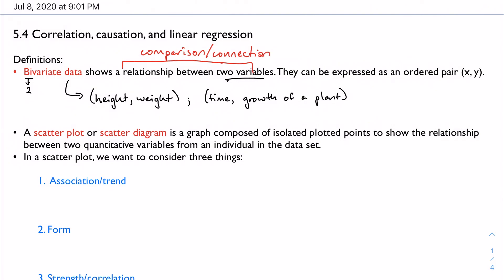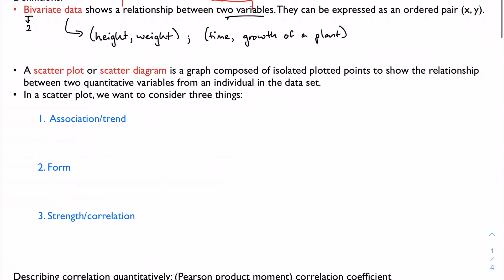What we do is take this bivariate data and put it on a scatter plot, or the book says scatter diagram. Regardless of what you call it, it's a graph composed of isolated plotted points to show the relationship between two quantitative variables from an individual in the data set.